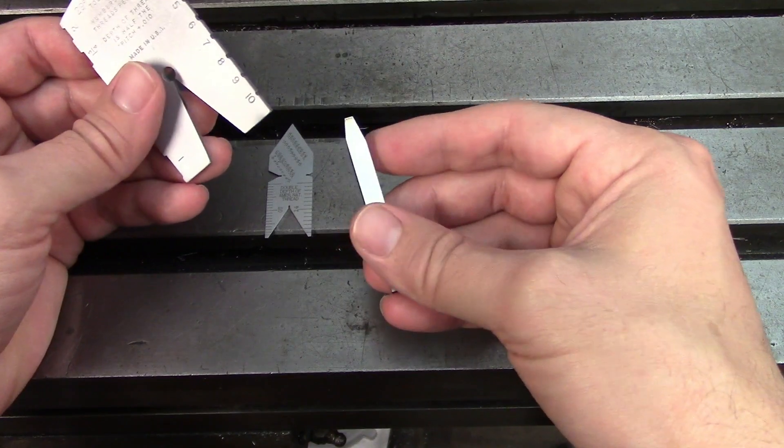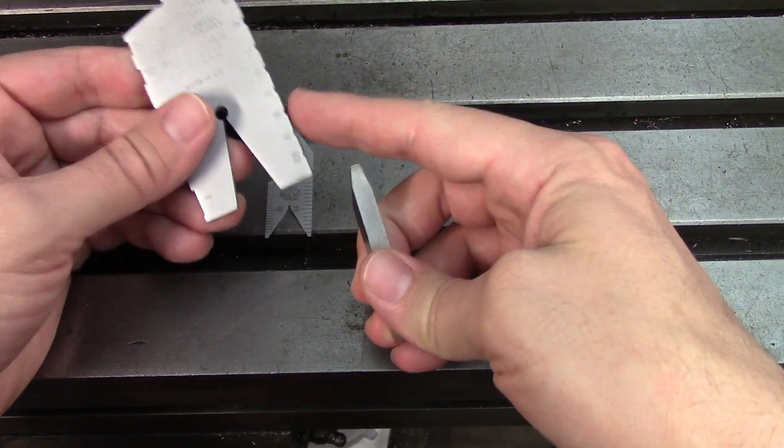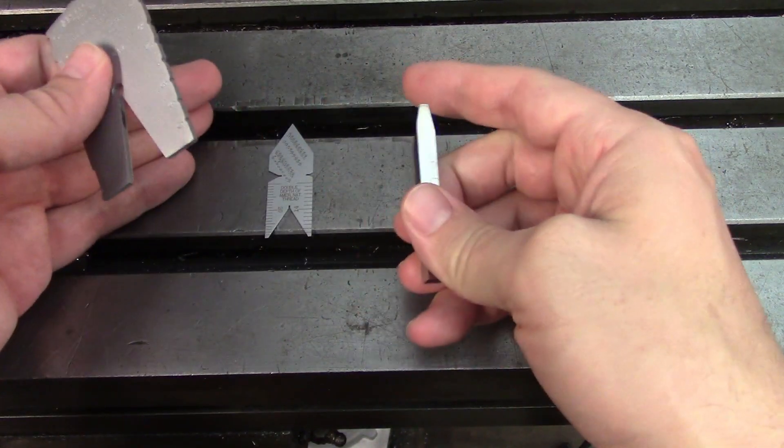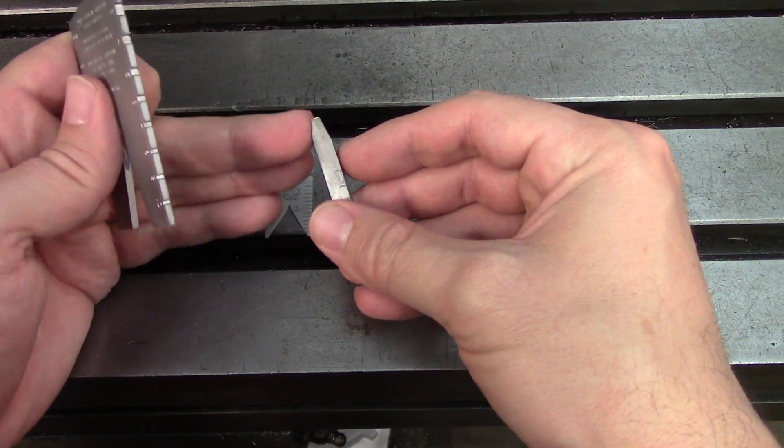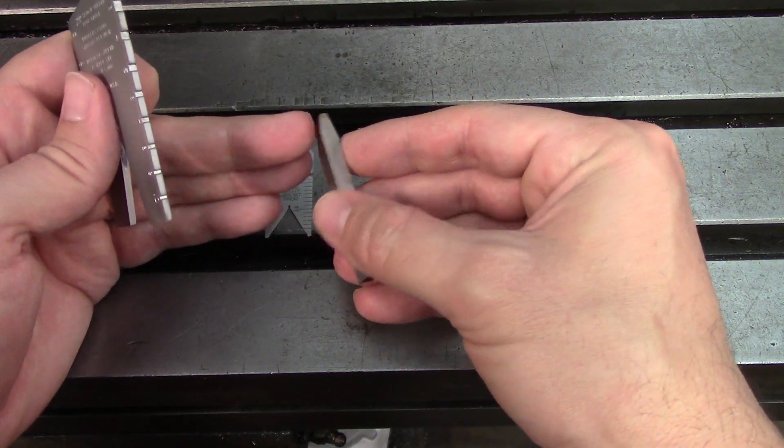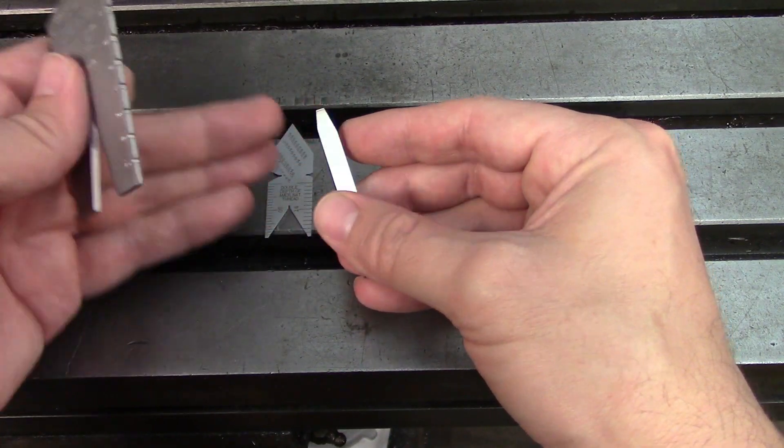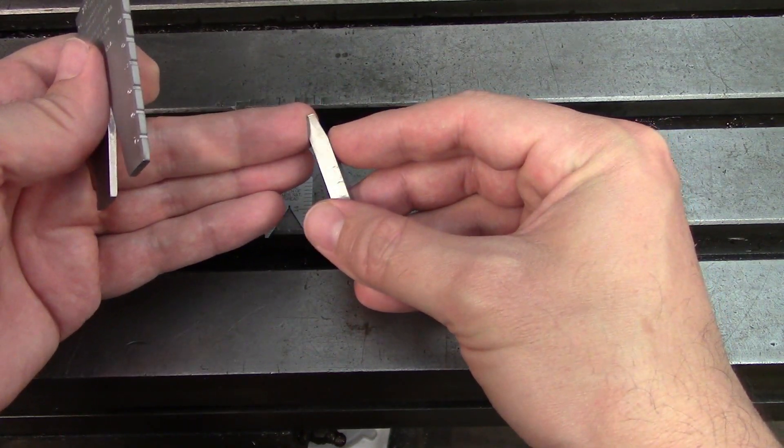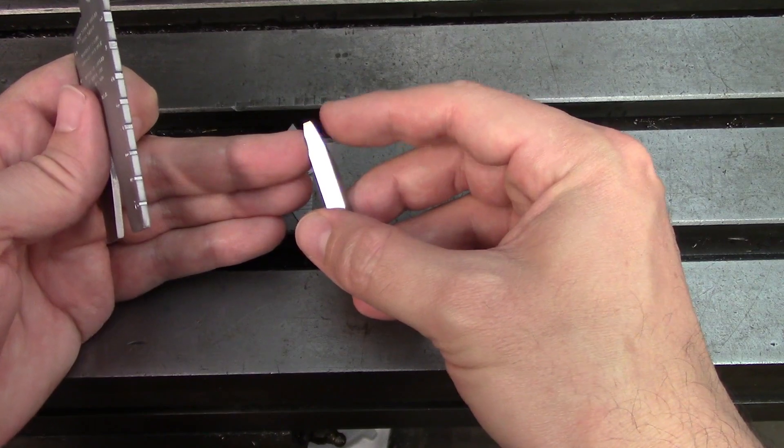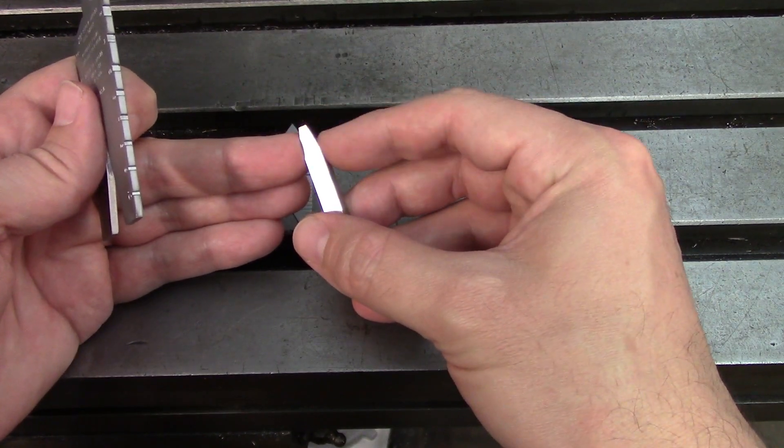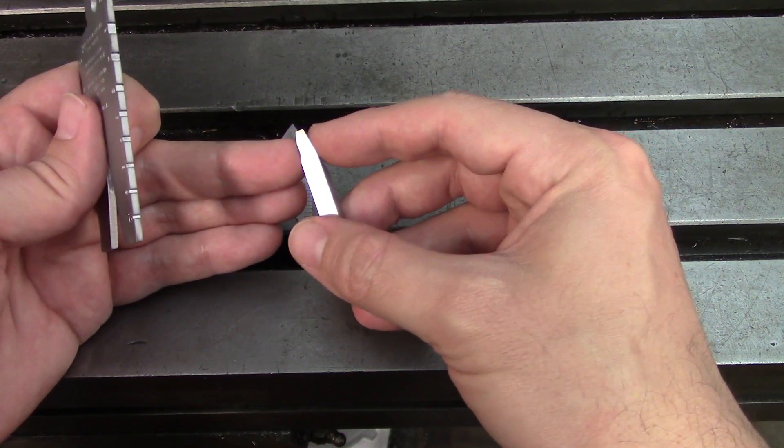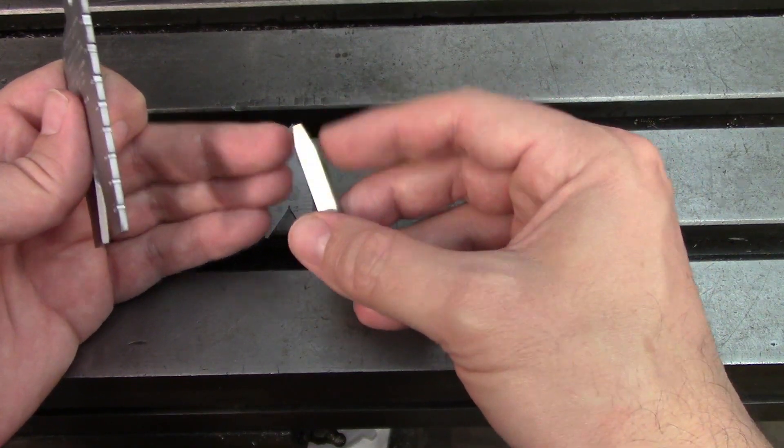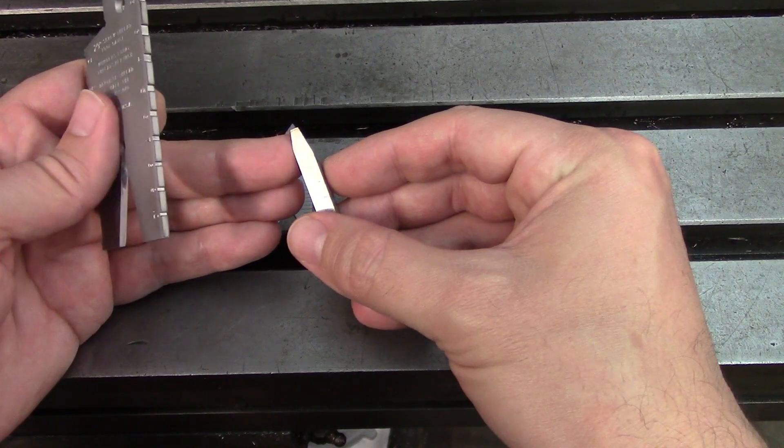In practice when I'm grinding a threading tool of any type, acme, 60 degree, whatever, I always establish one side first. I'll grind the angle roughly in, make sure that I get my clearances, make sure that it's nice and flat, and then I'll make all of my angular adjustments on the other flank. This just eliminates one possible way of messing up because grinding on both flanks makes it very easy to lose the angle on the tool.